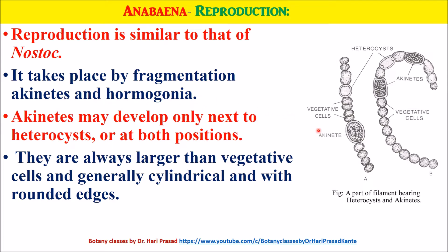Akinetes may develop only next to heterocysts or at both positions, on either side of the heterocysts. They are always larger than vegetative cells and generally cylindrical with rounded edges. Akinetes have thicker cell walls — 2 to 3 cell walls are present in the akinete cell walls.